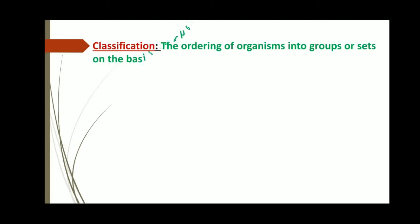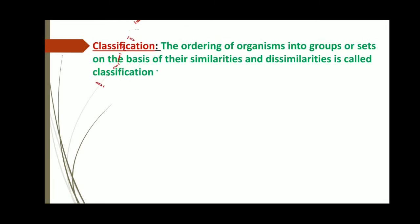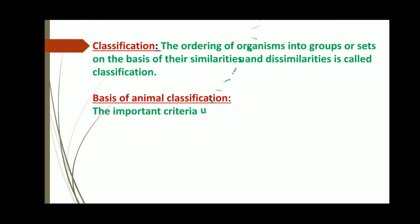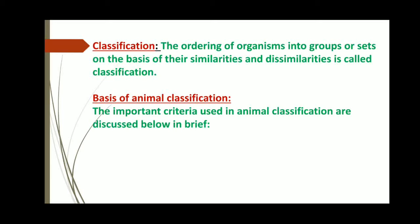Now classification, and why it is needed. A large number of animal and plant species have already been discovered in the world. It is so tough to memorize all the species individually; that is why classification is needed. Classification is the ordering of organisms into groups or sets on the basis of their similarities and dissimilarities. The important criteria used in animal classification are discussed below in brief.